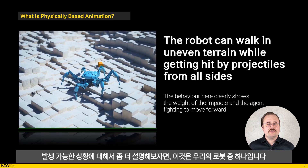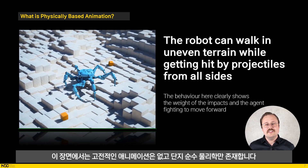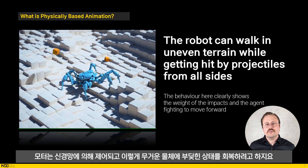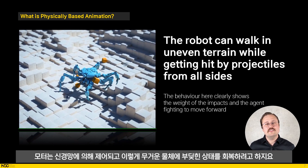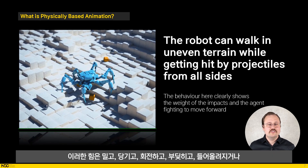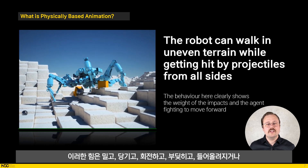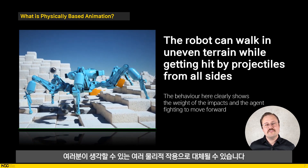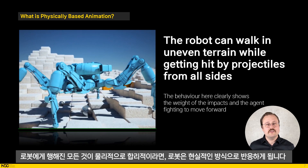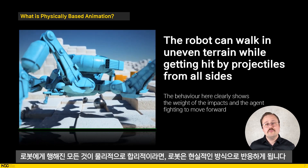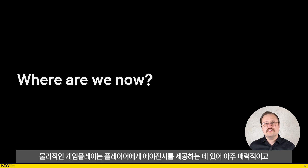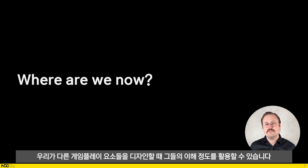To give a bit more context for what is possible, this is one of our robots. In this scene there are no classical animations at play — just pure physics. The motors are controlled by our neural network, and it attempts to recover from getting hit by heavy physical objects. These forces could be replaced by any physical action you can think of: pull, push, rotate, crush, or lift, or even full destruction or deformation of body parts. As long as everything that is done is physically reasonable, the robot will react in a grounded way. Physical gameplay is very enticing to help give players agency, and we can rely on their understanding when we design other gameplay components.